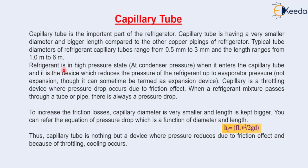Refrigerant is in a high pressure state — at condenser pressure — when it enters the capillary tube. The capillary tube reduces the pressure from condenser pressure to evaporator pressure. It is actually not an expansion device; though it can sometimes be termed as one, it is actually a throttling device, because for the capillary tube the process is isenthalpic — enthalpy is constant — and pressure drop occurs due to friction effect.